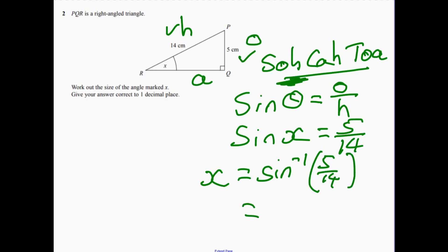And if you do that, and it does say one decimal place, it should be 20.9 degrees. We're going to do a second one.